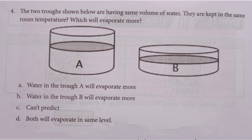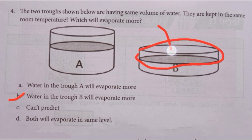Fourth question: the two troughs shown below are having the same volume of water and are kept at the same room temperature. Which will evaporate more? The answer is option B — water in trough B will evaporate more, because the wider surface area allows heat to enter more easily, so it evaporates more readily.